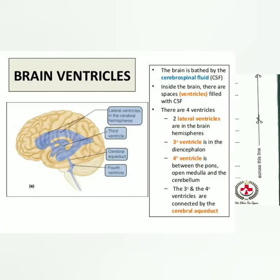Ventricles of the brain: the ventricular system is a set of communicating cavities within the brain, filled with CSF. There are four ventricles: first and second (lateral ventricles) in the brain hemispheres; third ventricle in the diencephalon; and fourth ventricle between the pons, medulla, and cerebellum. The duct connecting the third and fourth ventricles is the cerebral aqueduct.